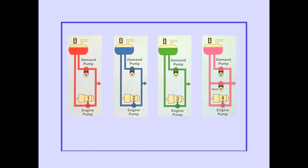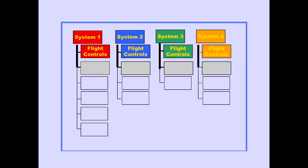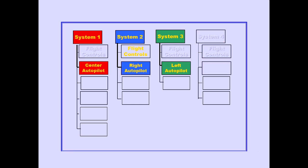There are four functionally independent hydraulic systems. Each system is pressurized by a combination of a demand hydraulic pump and an engine-driven hydraulic pump. System 4 also has an electric auxiliary pump. All four hydraulic systems power the flight controls. Three autopilots operate through systems 1, 2, and 3. Note that the center autopilot operates through system 1, the right autopilot through system 2, and the left autopilot through system 3.